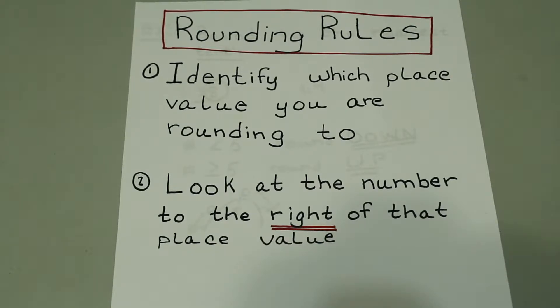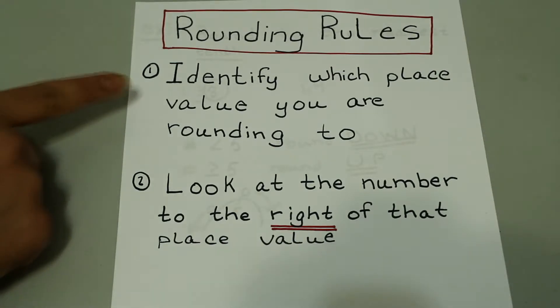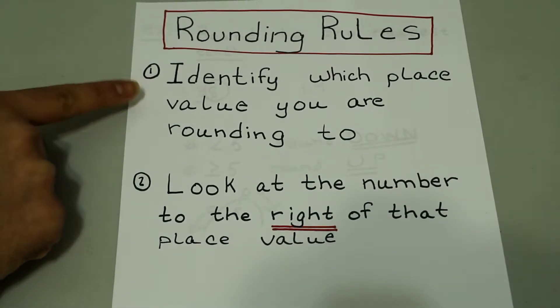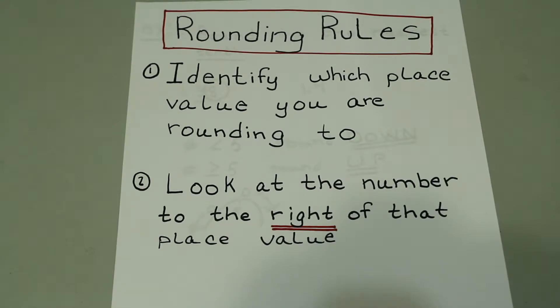To start off, let's do a refresher on rounding rules. So when we round, first things first, identify which place value you're rounding to. Second, look at the number to the right of that place value to figure out how you're going to round.